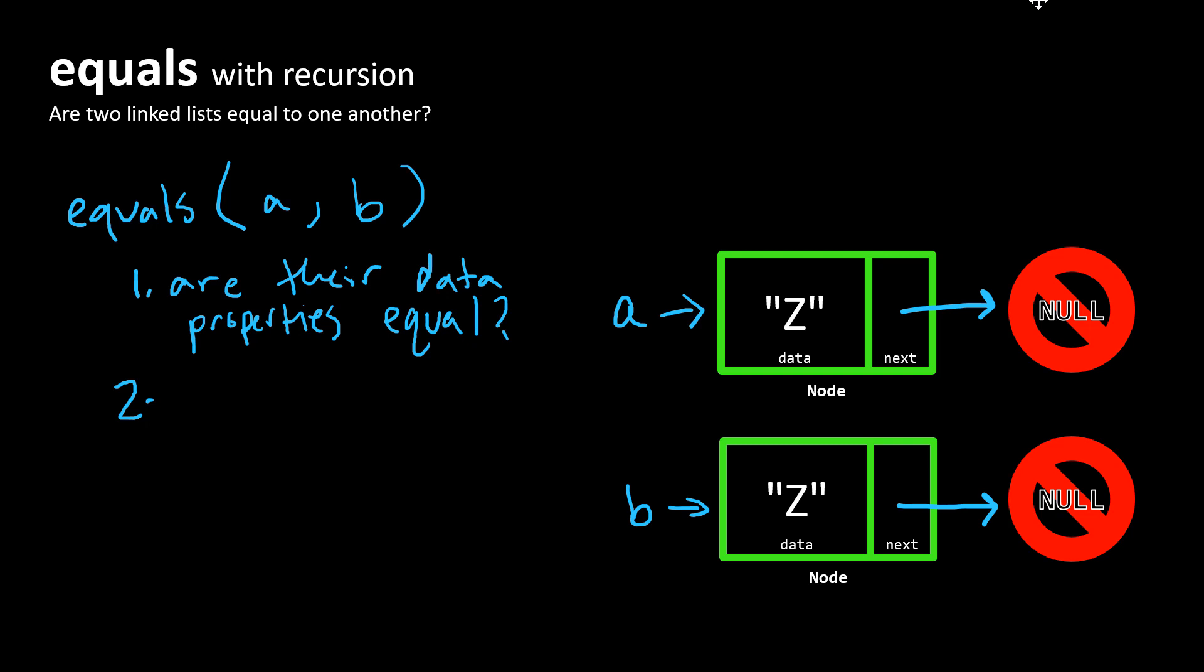In this case, next is equal to null, so that's true. So we would say another condition here is: is A's next value null?